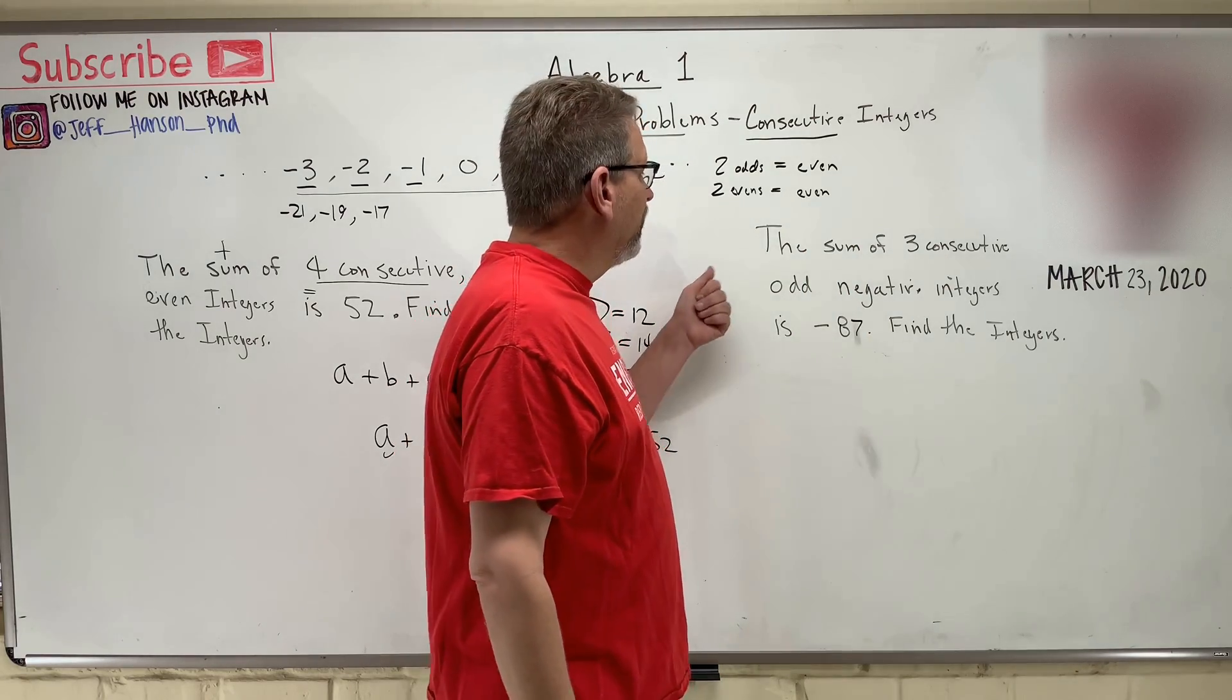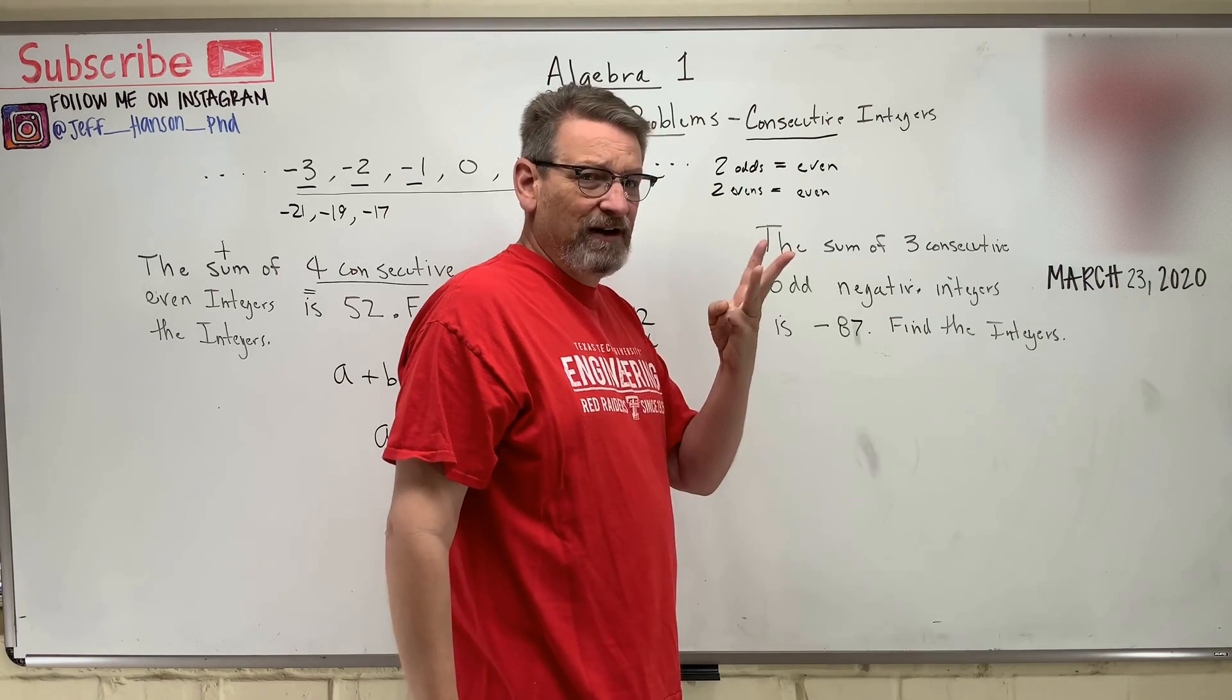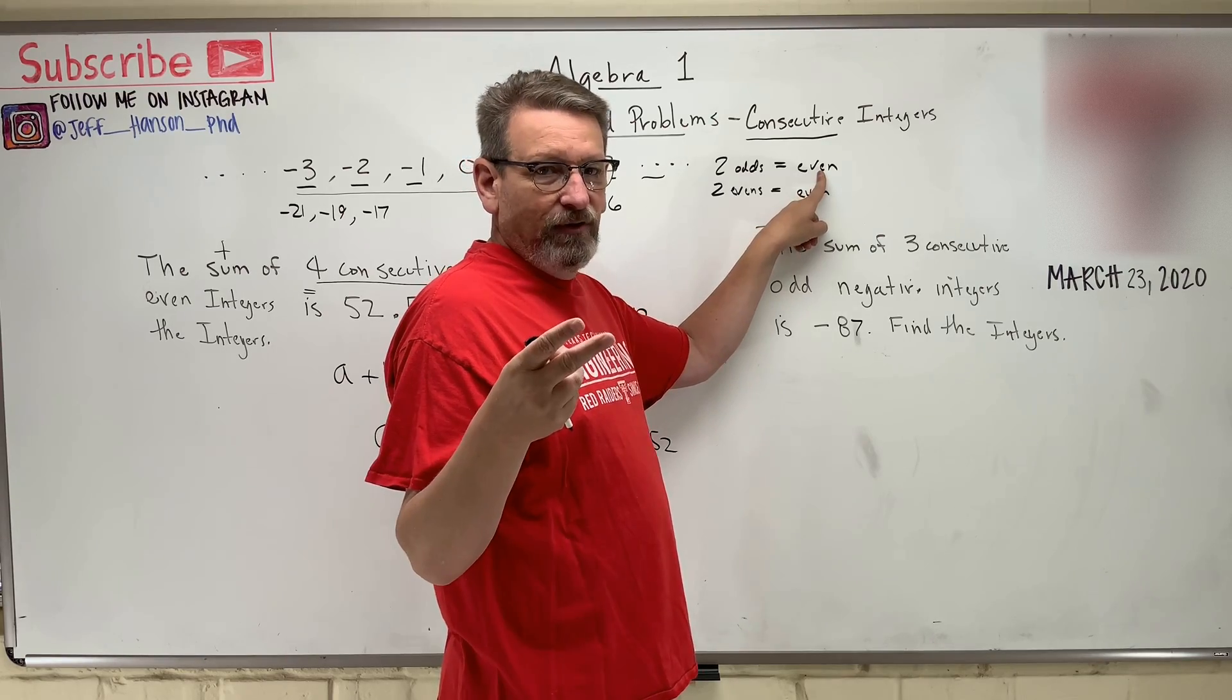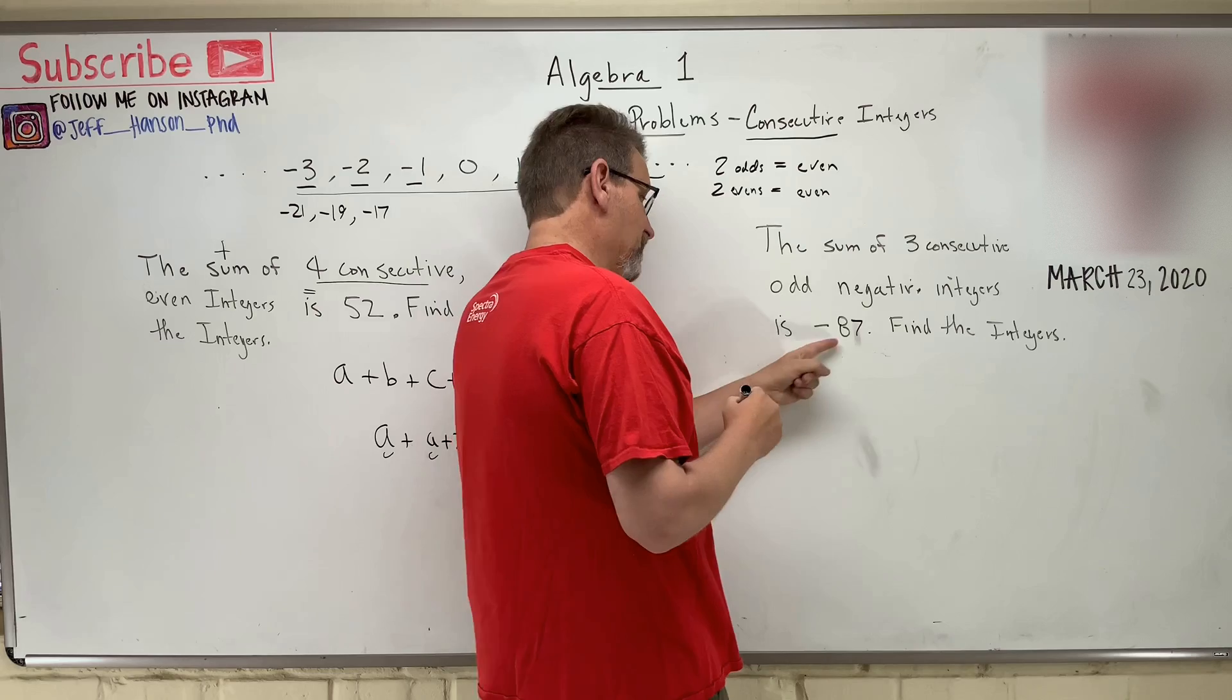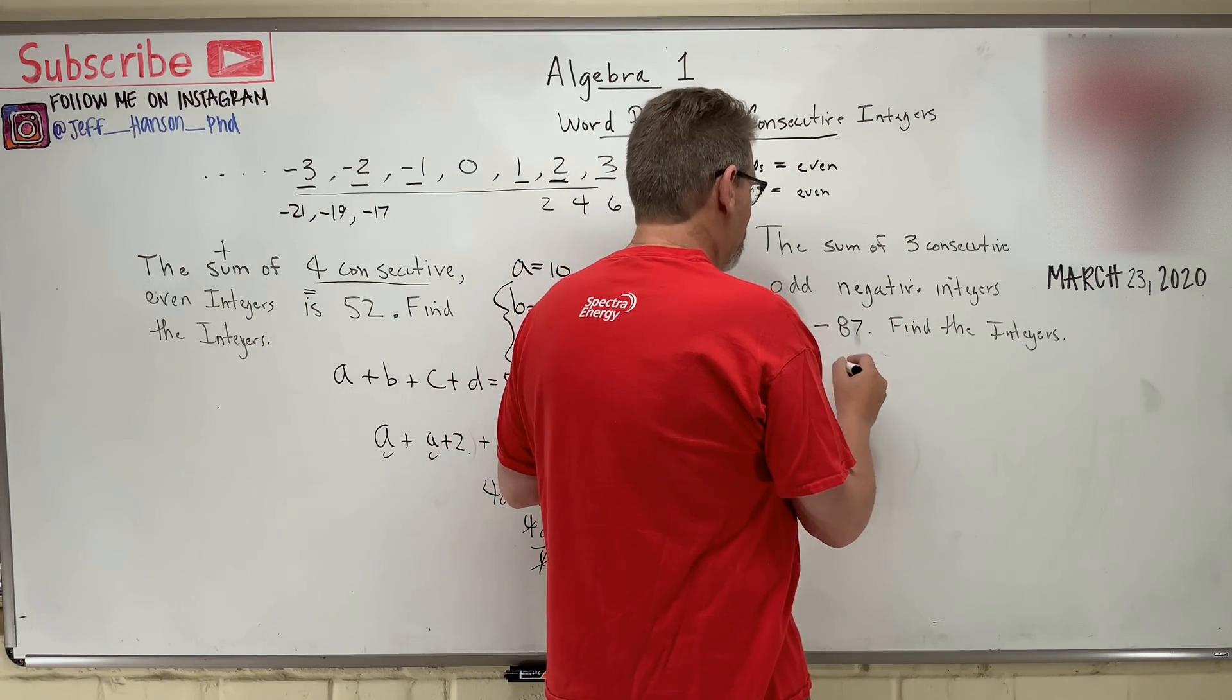Okay, so if I add three together, if I add three negatives together, two of the negatives would make it an even, but then when I add another negative to it, it goes back to odd again, okay? So this is going to be, it's possible to find this answer. Okay, so here we go.